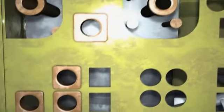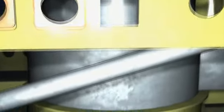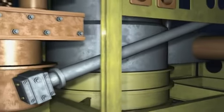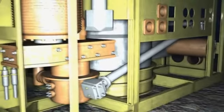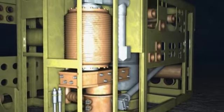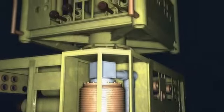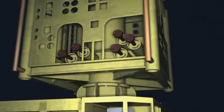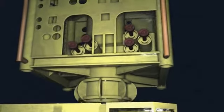When the conventional subsea Christmas tree is landed, it is hydraulically locked to the wellhead and the connection pressure tested to confirm pressure integrity. The tree running tool is then retrieved to surface.